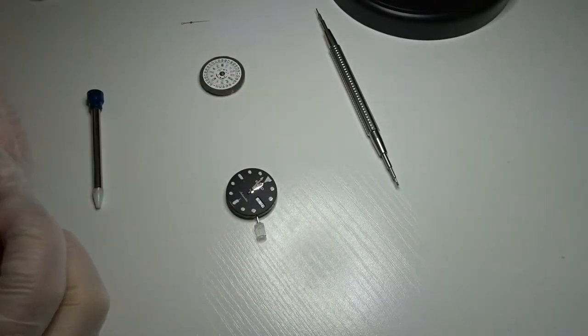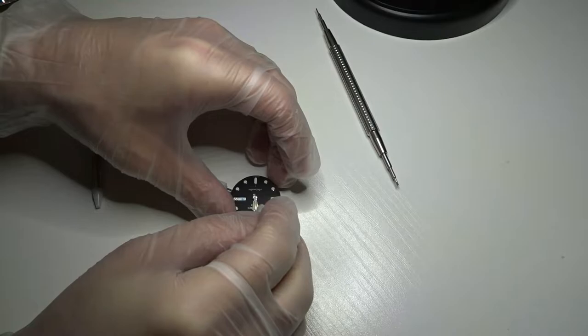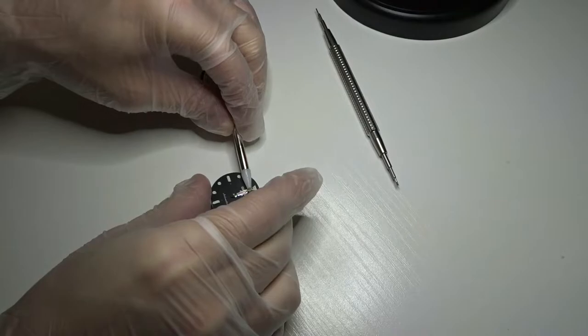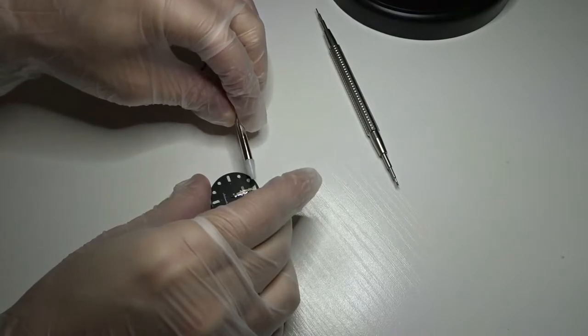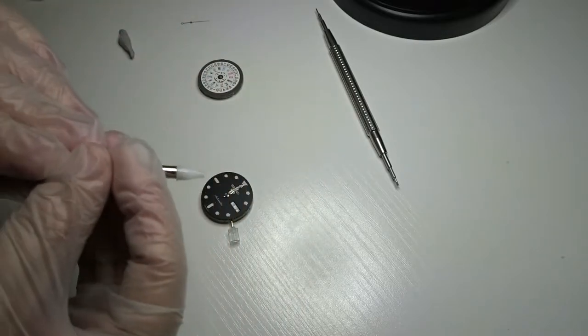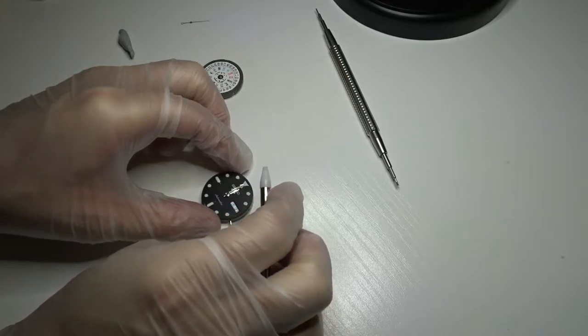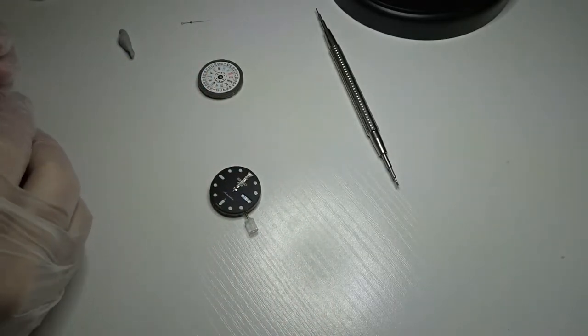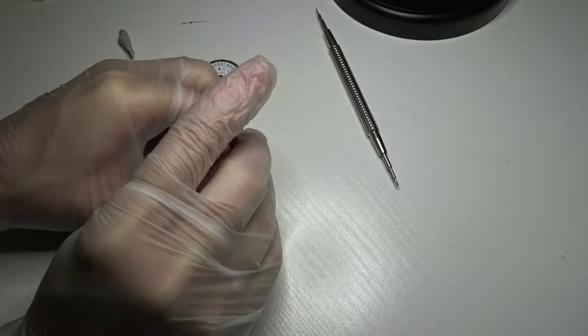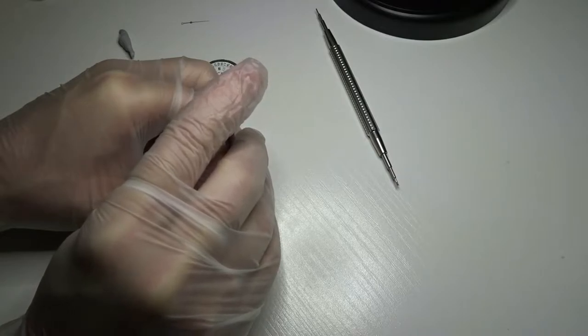So yeah, I'm just doing the same thing for the minutes hand. I'm just getting it on the post and I'm just gonna use whatever you want. I think I tried using rodico and then I switched to the hands tool. But anyway, just line it up as good as you can with the 12 o'clock indice. Once you're satisfied with the alignment, just press down firmly just like you did with the hour hand.